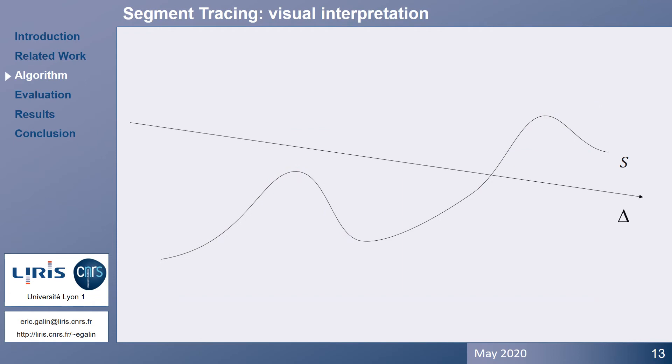In this example, we illustrate the benefit of segment tracing over sphere tracing. When the ray gets close to the surface, the local Lipschitz bound remains small and allows for longer steps.